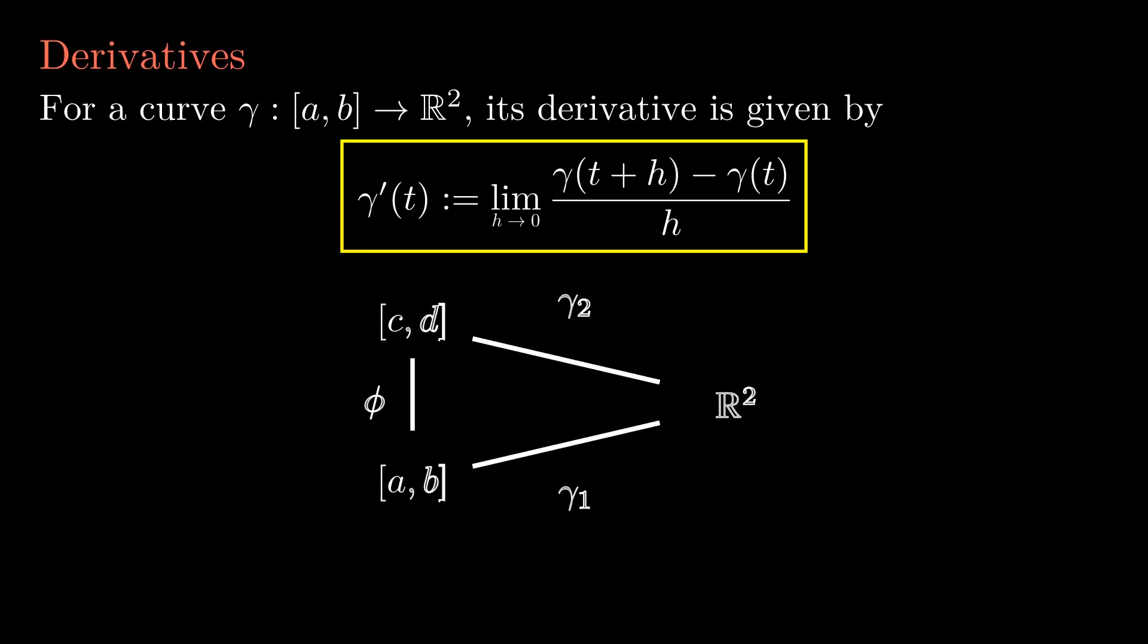If we take two parametrizations, gamma 1 and gamma 2, with gamma 2 equals gamma 1 composed with phi, then the velocity vector of gamma 2 is going to be the velocity of gamma 1 at the corresponding point, rescaled by the derivative of the function phi.